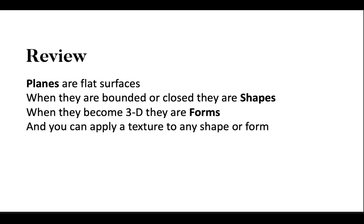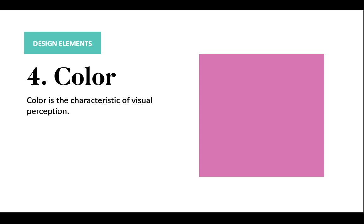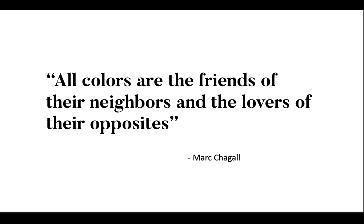The fourth design element is color. Color is a characteristic of visual perception described through color categories with names such as red, orange, yellow, green, blue, or purple. This perception of color derives from the stimulation of photoreceptor cells by electromagnetic radiation on your eye. Color has become an integral part of graphic design and learning how to master color will be the most vital thing that you can accomplish as a designer.